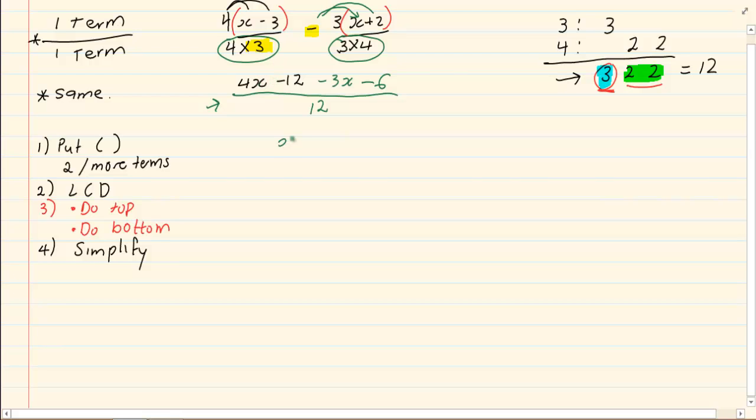Now we go on further to simplify the top. 4x minus 3x is x, minus 12 minus 6 is minus 18, all over 12. And you have now simplified the expression.